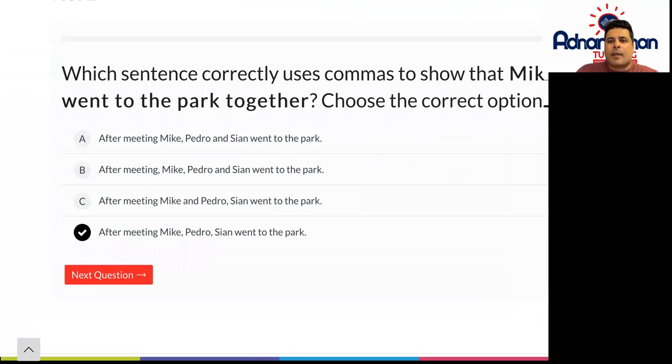I would go for option B because 'after meeting,' comma with a slight pause there, 'Mike, Pedro and Sean went to the park.' All right, so the comma should be actually after the word 'meeting' and then a full stop at the end of 'park.' So after meeting, Mike, Pedro and Sean went to the park.